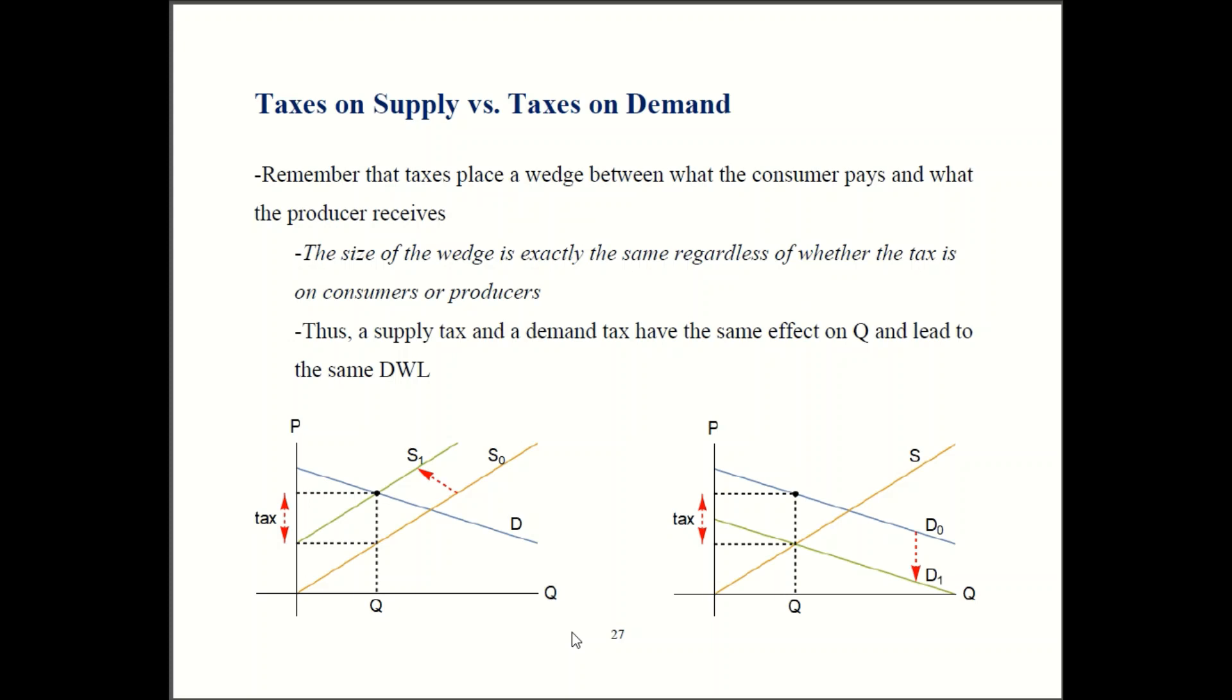So to develop intuition, I stress that a tax places a wedge between what the consumer pays and what the producer receives. Importantly though, the size of that gap is going to be independent of whether you tax consumers or whether you tax producers. If I tax producers by two dollars per unit, then supply shifts up by two dollars. You get this two dollar gap. If I tax consumers by two dollars per unit, then demand shifts down by two dollars. I get the same two dollar gap.